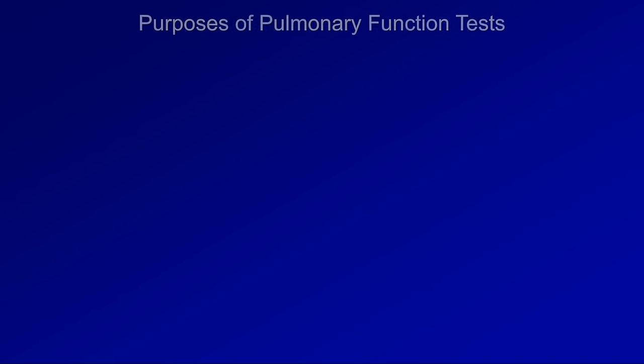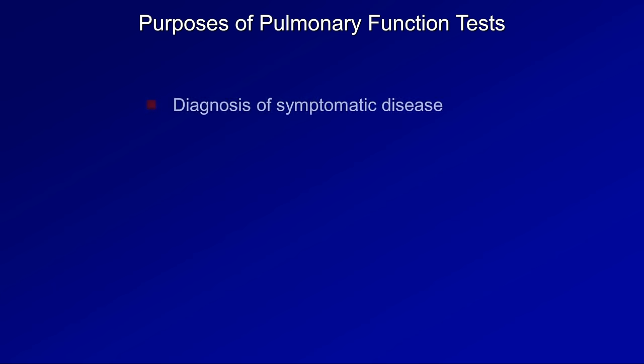What are the purposes of PFTs? What are the general reasons that would lead a clinician to order them? First and foremost, they can be used to diagnose symptomatic disease. This is, by a large margin, the most common reason to order them. Typical symptoms or signs that might trigger PFTs would be chronic dyspnea or cough, or unexplained hypercapnia or hypoxemia, particularly if any of these develop in a patient at increased risk of lung disease, such as smokers and those with occupational exposures.